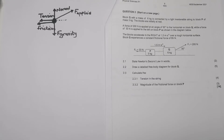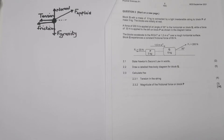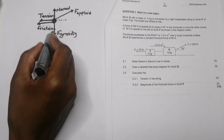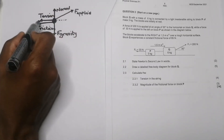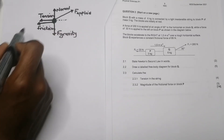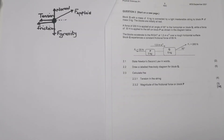Question 2.3.1 asks us to calculate the tension in the string. We will use block Q for this calculation. Remember that we have two types of forces — vertical and horizontal — and since the system accelerates horizontally, we consider only the horizontal forces.